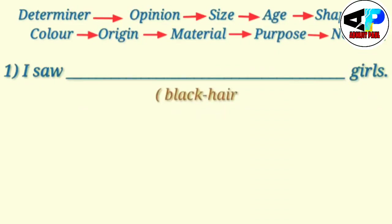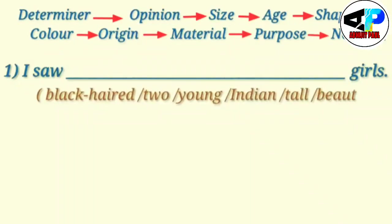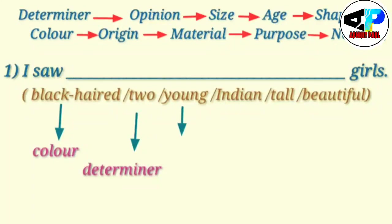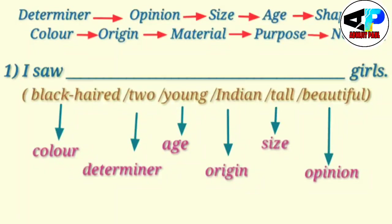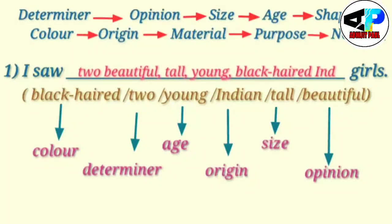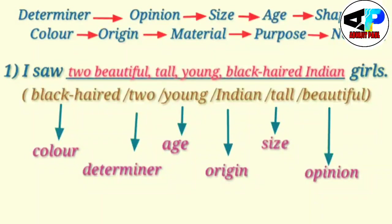Now let us look at some examples. 'I saw ___ girls.' The adjectives given are: black-haired, two, young, Indian, tall, and beautiful. Black is color, two is a numeral/determiner, young is age, Indian is origin, tall is size, and beautiful is opinion. So the sequential order is: determiner (two), opinion (beautiful), size (tall), age (young), color (black-haired), origin (Indian). The correct sentence is: 'I saw two beautiful tall young black-haired Indian girls.'